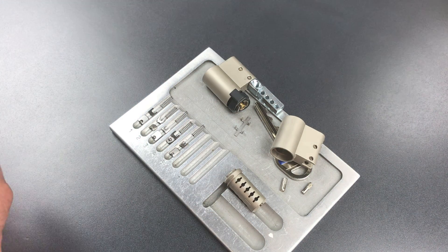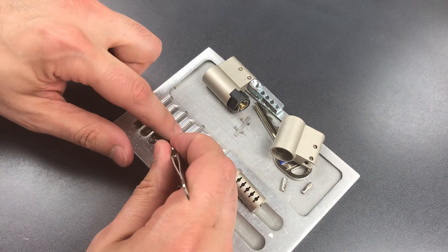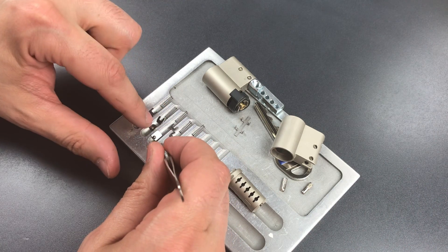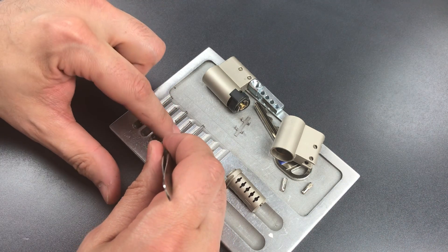And I'm taking these out with the ball bearings that I referenced earlier. Okay, I think that gutting went pretty well. Let me turn this around so it's the same way it would be situated inside of the lock.